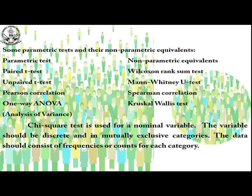Here you can see some parametric tests and their non-parametric equivalents. For the paired t-test, the non-parametric equivalent is the Mann-Whitney U test. For correlations or associations between variables, parametric tests use Pearson correlation, while non-parametric tests use Spearman rank correlation. For one-way ANOVA — when more than two variables are compared — parametric uses analysis of variance, while non-parametric uses the Kruskal-Wallis test. The chi-square test is used for nominal variables where the variable should be discrete.